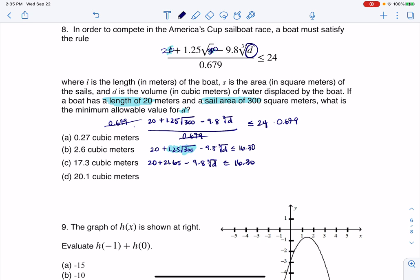And if I look on the left side of that inequality, I can see that these are like terms, so I can go ahead and add them together. So I'm looking at 41.65 minus 9.8 times the cube root of D. That's got to be less than or equal to 16.30.